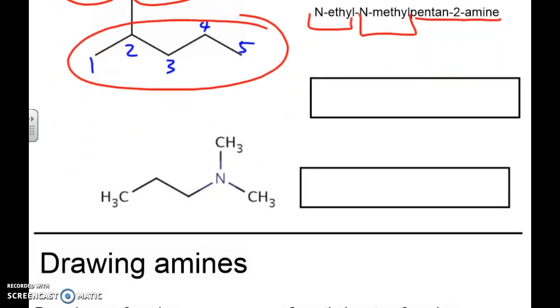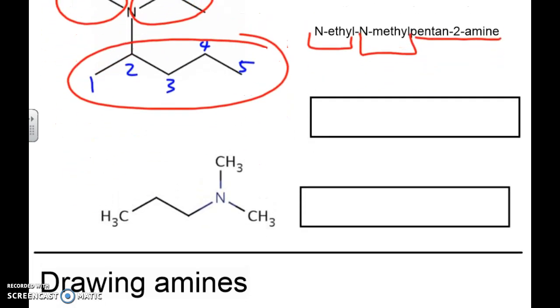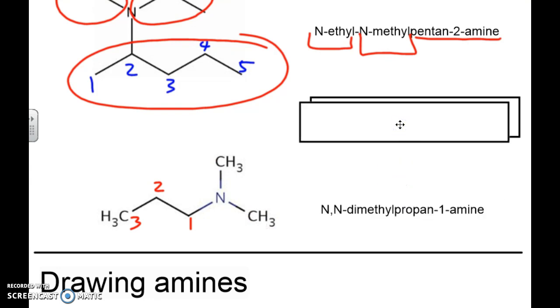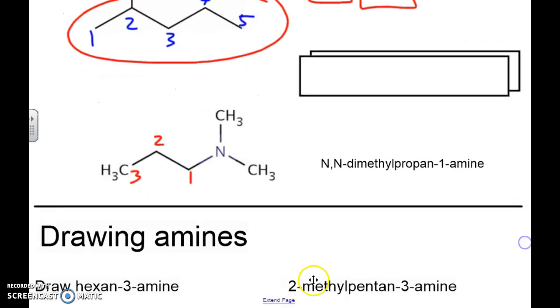Now if we look at our next group right here, what you're going to see is that we've got our main chain being right here. So one, two, three. So this is going to be propan-1-amine. Now you've got a CH3 group here and you've got a CH3 group here. So you've got two of them. So it's going to be N,N-dimethylpropan-1-amine.